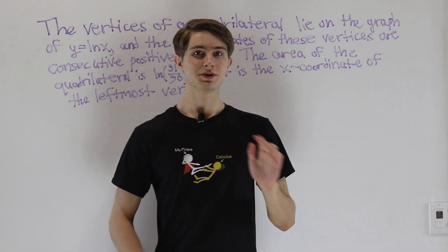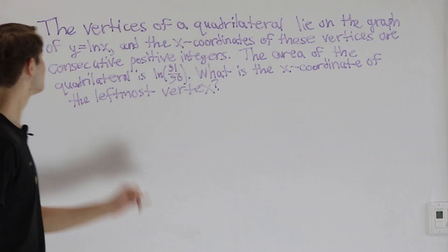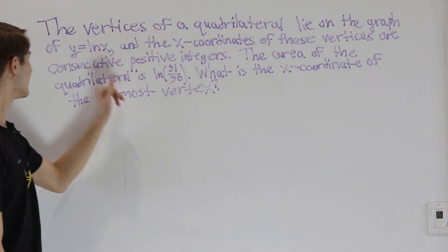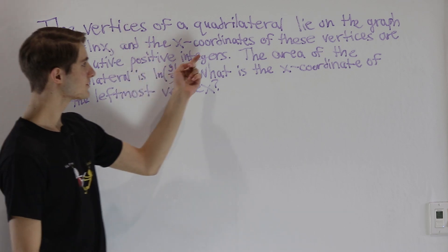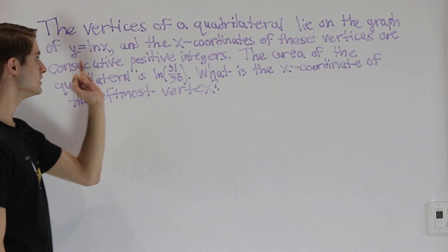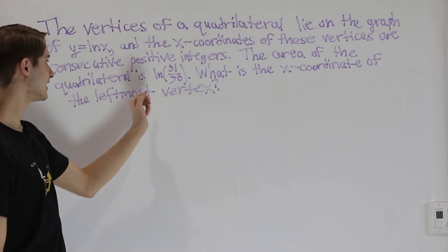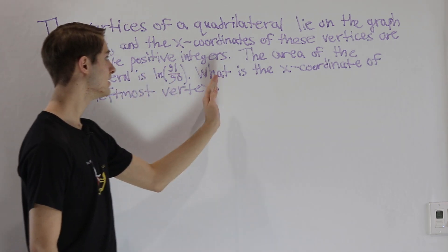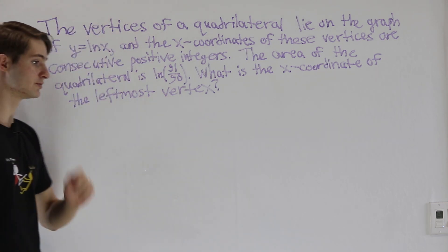We are going to do the 2020 AMC 12A problem 17. The vertices of a quadrilateral lie on the graph of y equals natural log x, and the x-coordinates of these vertices are consecutive positive integers. The area of the quadrilateral is natural log of 91 over 90. What is the x-coordinate of the leftmost vertex?